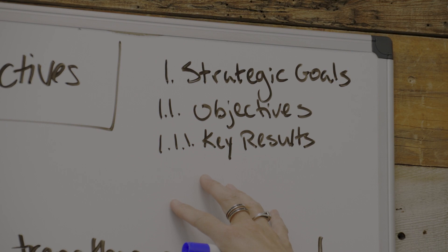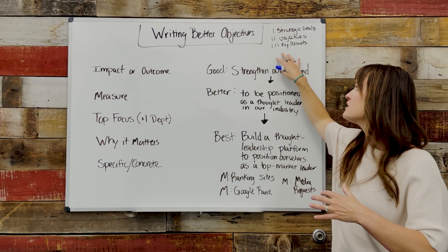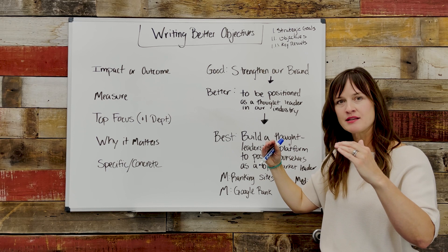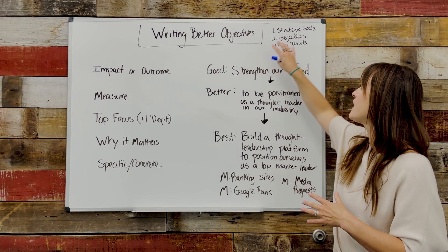First things first, let's talk about where we are in our plan structure and get oriented. The top level of the plan is our strategic goals. Underneath that are our annual objectives. And then underneath that cascades to key results or initiatives.